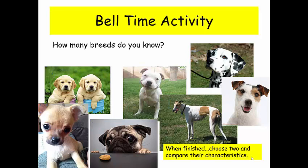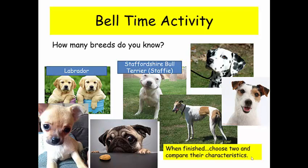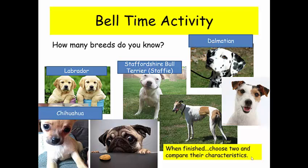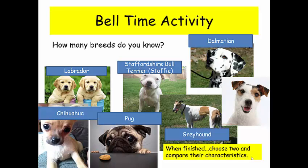So puppies number one are Labradors. That grinning guy in the middle is a Staffordshire Bull Terrier or Staffy. The spotty guy up in the top right is a Dalmatian. Bottom left is a Chihuahua. Then we've got a Pug, a Greyhound and a Jack Russell.